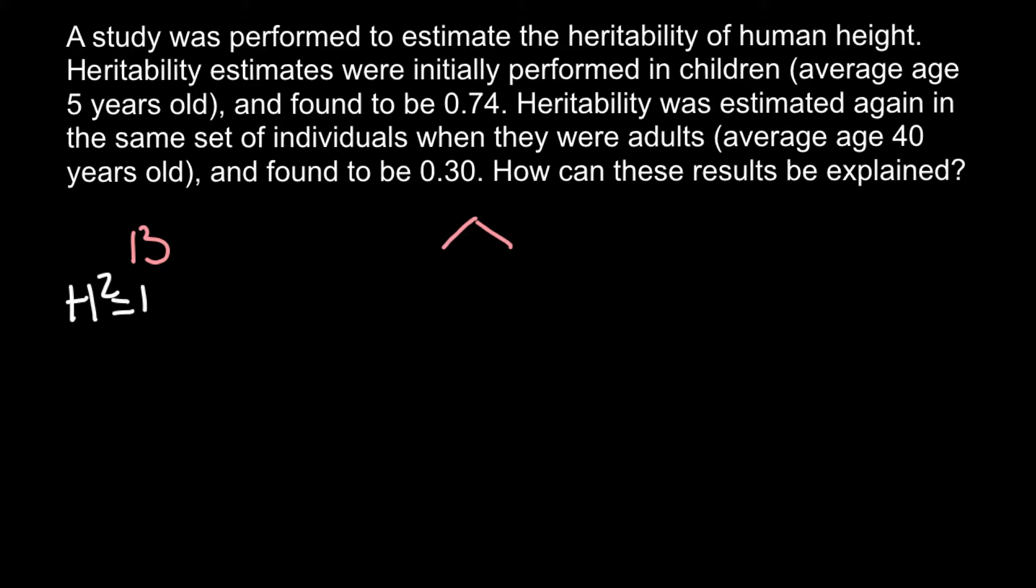So in this case, H capital squared or broad sense heritability, we can say would be 0.5 or 50% would be influenced by genetic makeup and 50% of the weight can be explained by the different influence of the environment, because in these two families we would have a different environment.